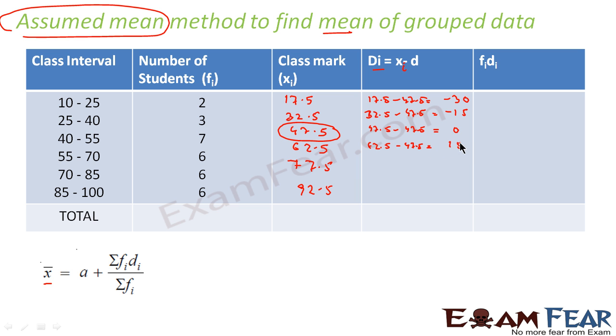And this is 47.5 minus 47.5, that is 0. Here it is 62.5 minus 47.5, so this guy came out to be 15. This guy is 77.5 minus 47.5, that is 30. And this guy is 92.5 minus 47.5, and this guy came out to be 45.